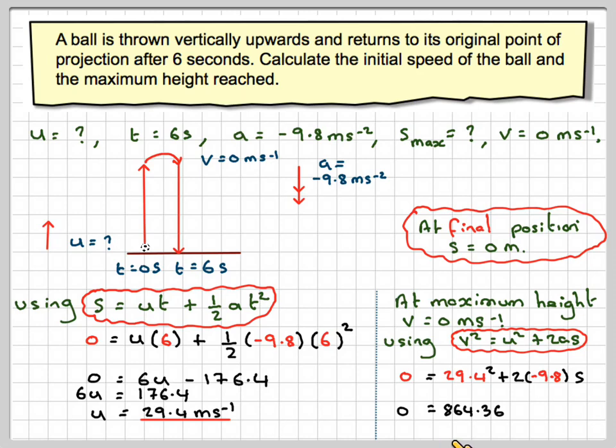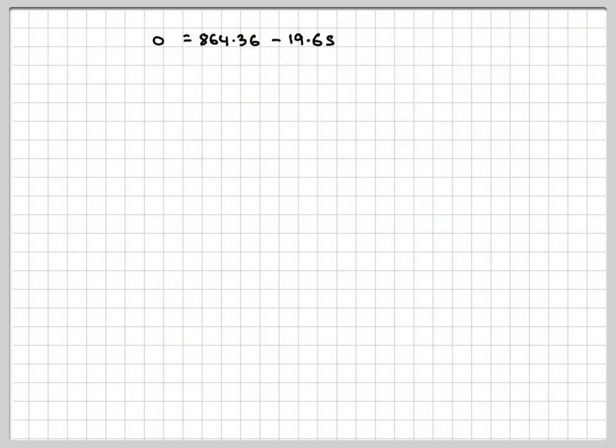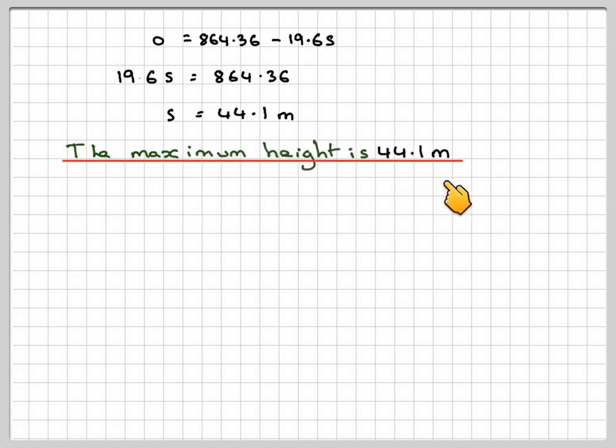So if we've got 0, it will be 864.36 when we square that. Don't forget to square it, minus 19.6S. Writing that out again, we're going to have 19.6S equals 864.36, and therefore S will be equal to 44.1 metres. The maximum height is 44.1 metres.